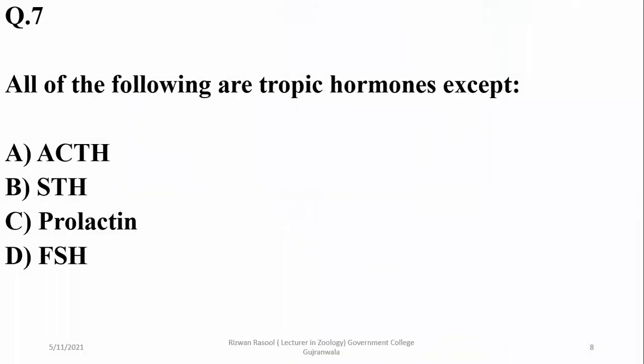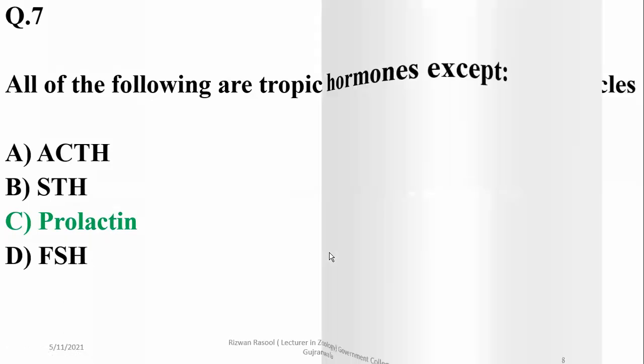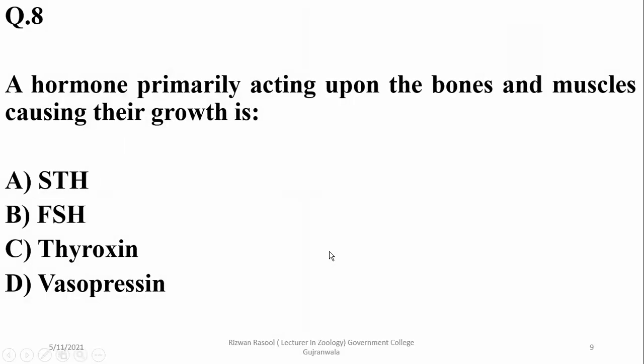All of the following are tropic hormones except: tropic hormones are those hormones which activate other glands to secrete their hormones. All listed hormones are secreted by the anterior pituitary, but prolactin acts on the mammary glands, which are exocrine in nature. So C is the right answer.